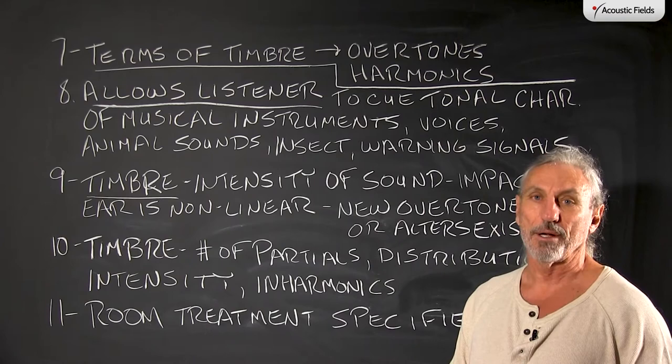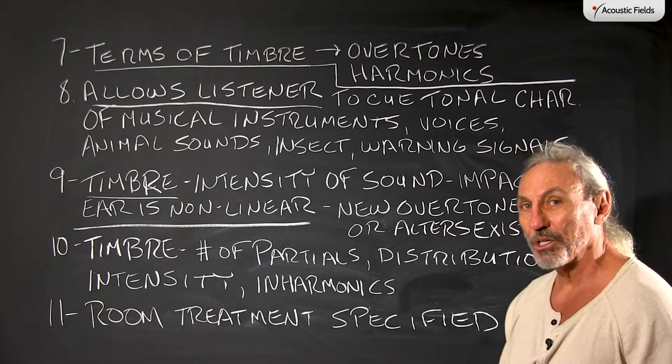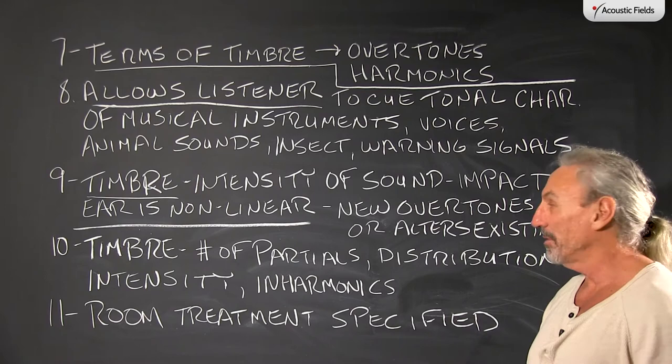The ear is not linear. So we may have a linear relationship in our room, but our ear may not be able to grab a hold of that — especially the older we get. It'll produce new overtones or alter existing ones. So all of this has to be taken into consideration.